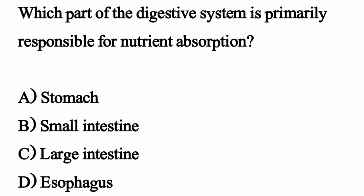Which part of the digestive system is primarily responsible for nutrient absorption? The correct option is Option B: Small intestine.